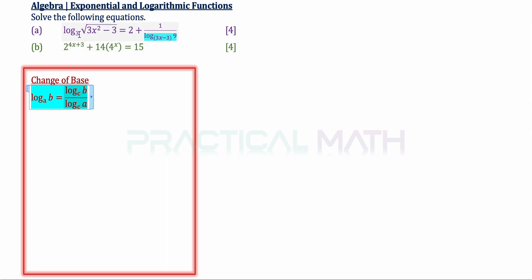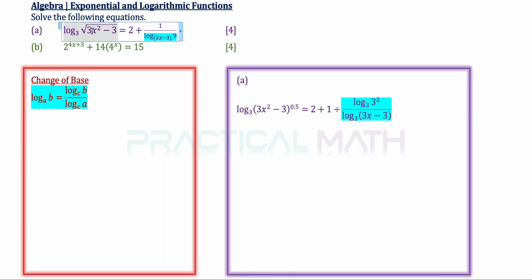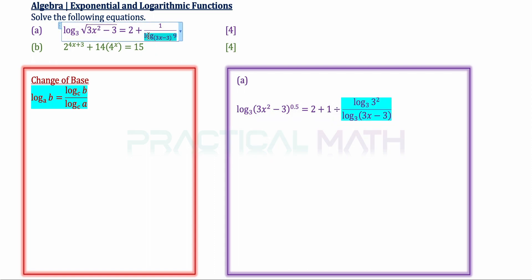The question is: what base do we change to? My advice is to change to base 3, because base 3 is easier to manipulate as opposed to base 3x minus 3. So in the first step of our solution, the square root of 3x squared minus 3 is rewritten as 3x squared minus 3 to the power of one half. On the right, we express the 1 divided by the log using the change of base formula, changing from base 3x minus 3 to base 3.